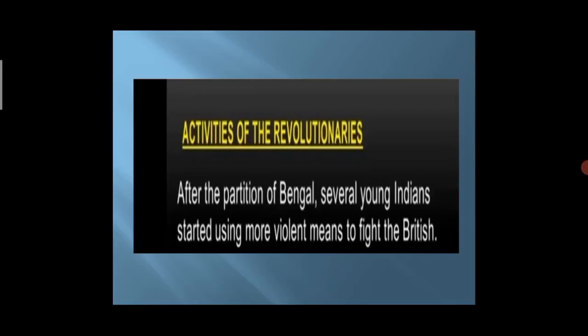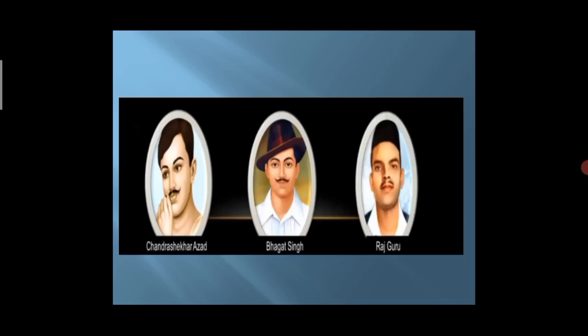Our next topic is the Activities of the Revolutionaries. After the partition of Bengal, several young Indians started using more violent means to fight the British. They formed a group to fight the British and were willing to sacrifice their lives for the country. They are called the revolutionaries. However, the movement was not very successful.